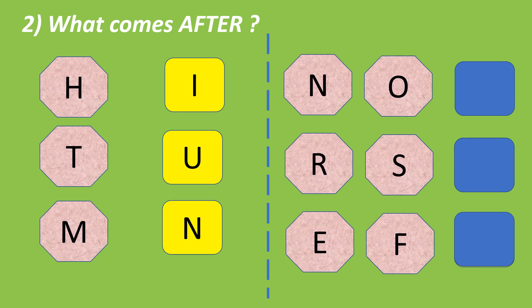Now, let's see the sequence one more time. So, what comes after N, O and P? What comes after R, S and T? That's correct. What comes after E, F and G? That's absolutely correct. Great job, guys!